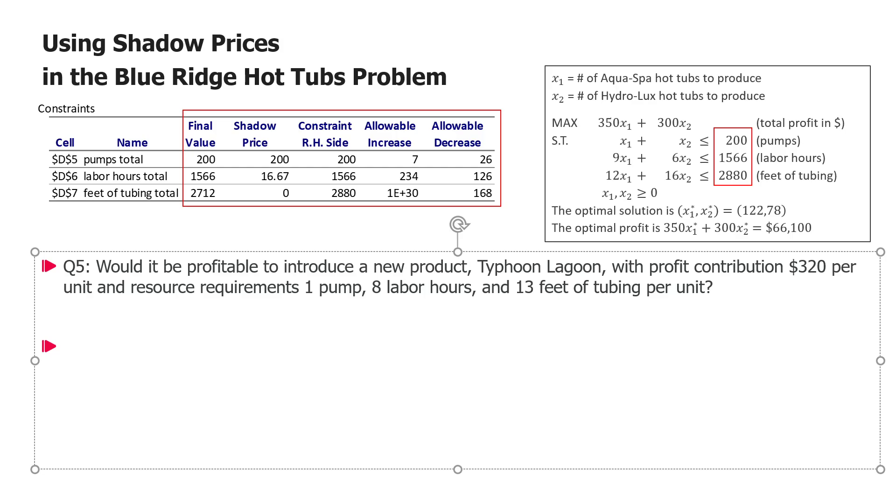Now there's an interesting thing we can do and there's an analysis using shadow prices that we can do without resolving and this is especially useful if we have potentially a lot of possible products we could produce and we're thinking which one should we introduce from the perspective of profitability. So what I'm going to tell you is the following. Imagine if we were to just produce one Typhoon Lagoon, right one of those products, what would be the gain? Suppose one Typhoon Lagoon is produced. The gain is 320 dollars of extra profit. What is the cost? Cost is due to shifting resources away from the old products to Typhoon Lagoon.